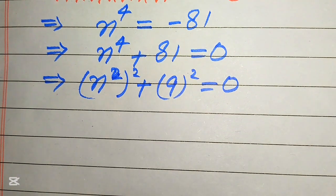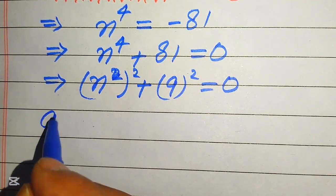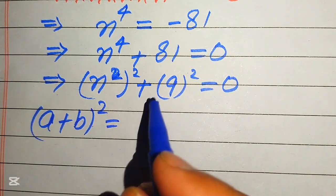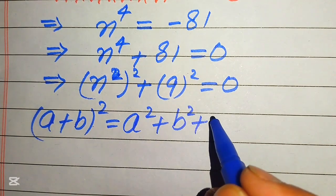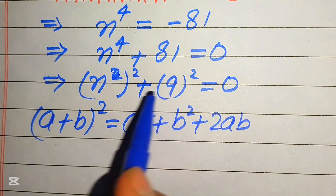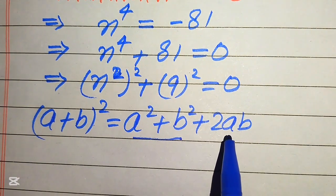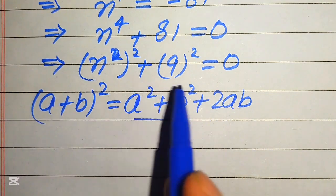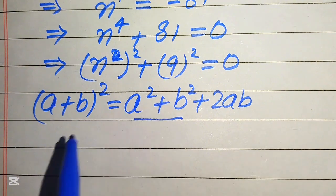Now we need to complete the square of this term. In order to complete the square we use the formula: (a + b)² equals a² + b² + 2ab. Here we have the a² and b² terms, but we need the 2ab term. So in order to create this term we need to add and subtract 2ab on the left-hand side.